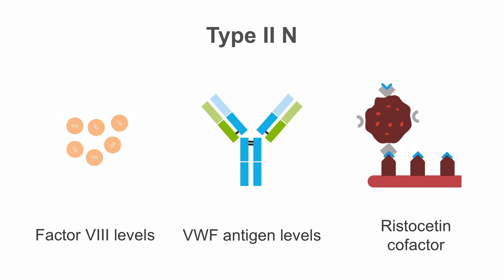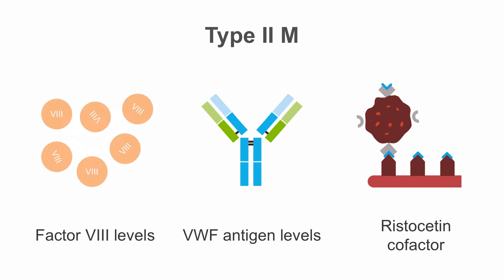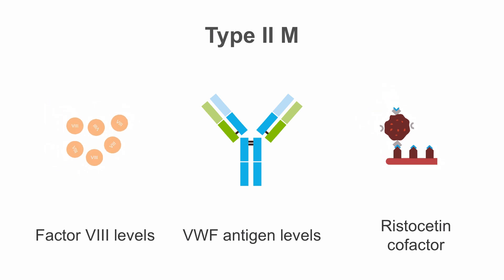In type 2N, factor 8 levels are low. This is because in type 2N, von Willebrand's factor and factor 8 cannot bind properly, so factor 8 is thus destroyed. In type 2M, von Willebrand's factor antigen levels will be normal, while functional activity and factor 8 levels are low. This is because in type 2M the multimers are present but do not work properly.